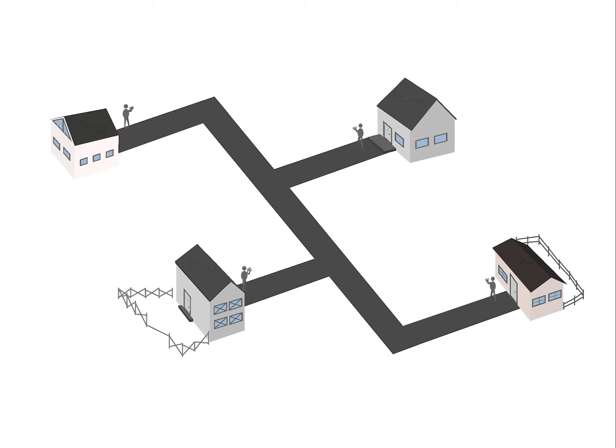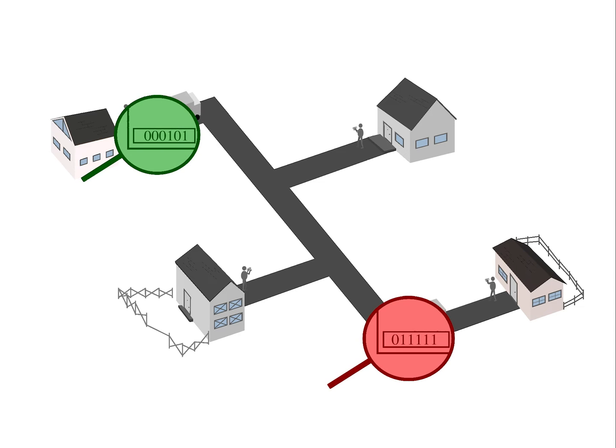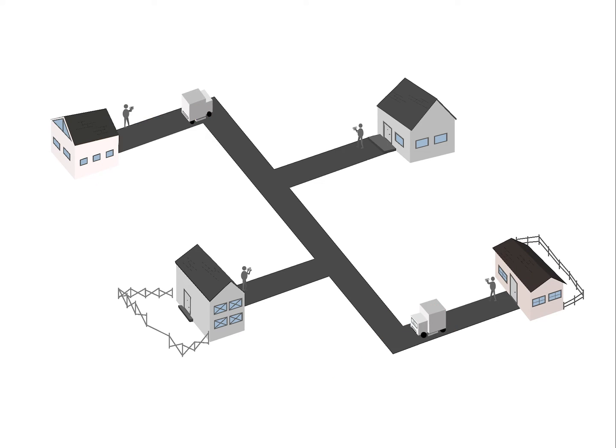Because there is no coordinated schedule, it can occur that two trucks want to use the CAN road at the same time. This would cause a collision with loss of information. Priority is given to the one with the lower number on the number plate. The truck with the higher number needs to wait for road access until it has the lowest number plate itself.